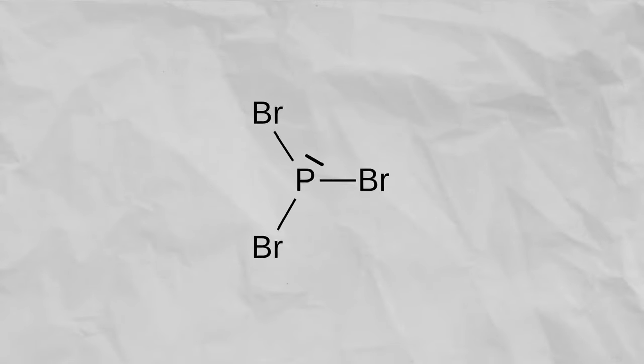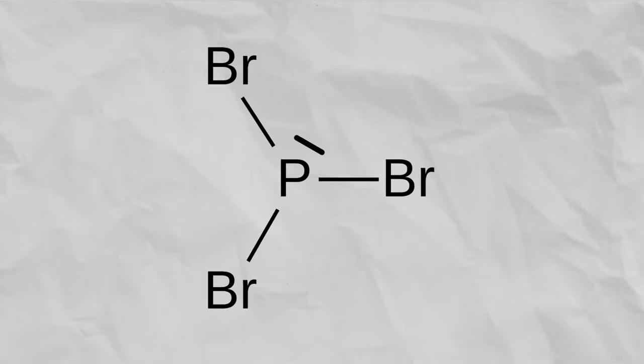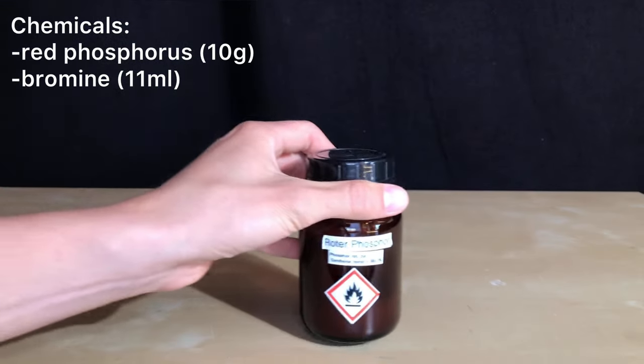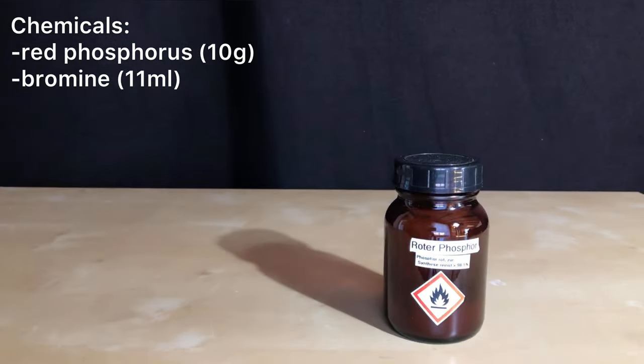Welcome back everyone. Today we are going to make another useful component called phosphorus tribromide. The reason we are making it is that it can be used as a brominating agent for alcohols.